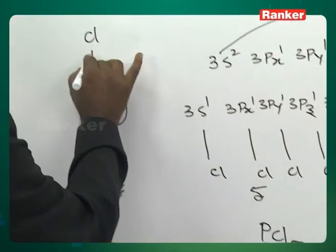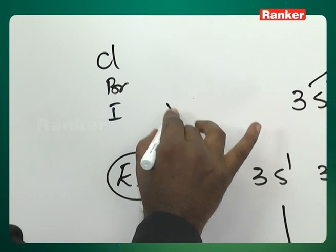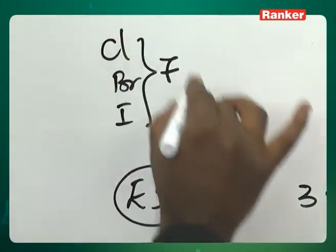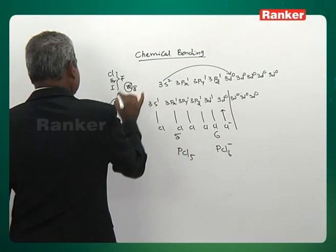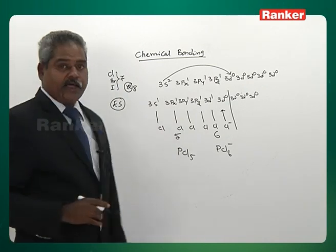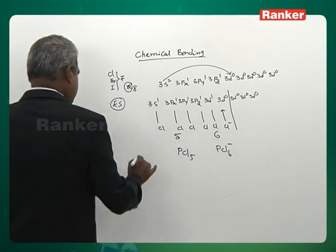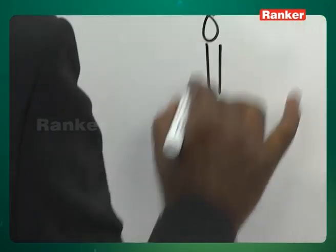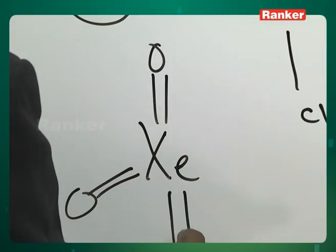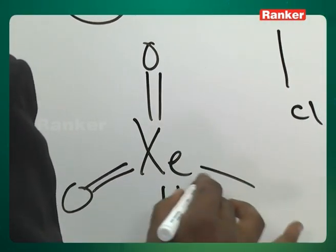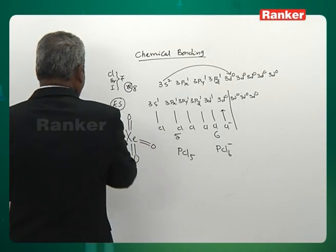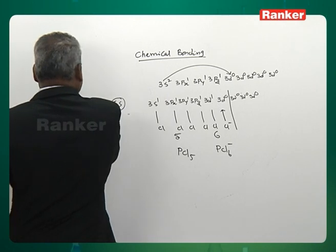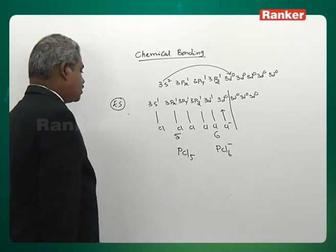Exceptions: halogens (chlorine, bromine, iodine) have a maximum covalency of seven, and xenon has a maximum covalency of eight. In XeO4, xenon forms eight bonds using its own electrons. These elements can exceed six because all participating electrons belong to themselves — they are not borrowing from anyone.